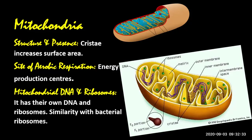Glycolysis takes place in the cytoplasm, while the Krebs cycle and electron transport chain are within the mitochondria. There is major energy production happening in the mitochondria, specifically on the inner mitochondrial surface. So the energy production center is mitochondria, through aerobic respiration, which requires oxygen.